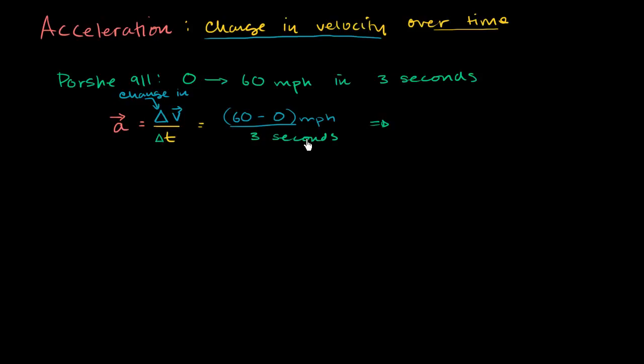Let me write this down. So this becomes, this top part is 60. 60 divided by 3 is 20. So we get 20, but then the units are a little bit strange. We have miles, instead of writing MPH, I'm going to write miles per hour.